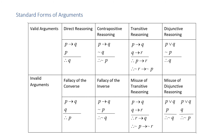Standard forms of arguments. We have four common standard forms of valid arguments: direct reasoning, contrapositive reasoning, transitive reasoning, and disjunctive reasoning. We also have four common standard forms of invalid arguments: the fallacy of the converse, the fallacy of the inverse, misuse of transitive reasoning, and misuse of disjunctive reasoning.